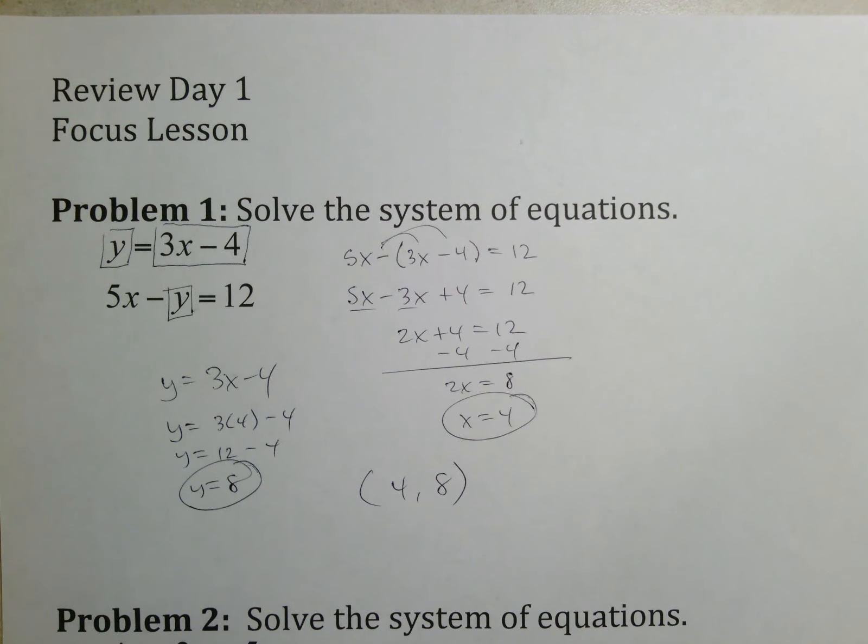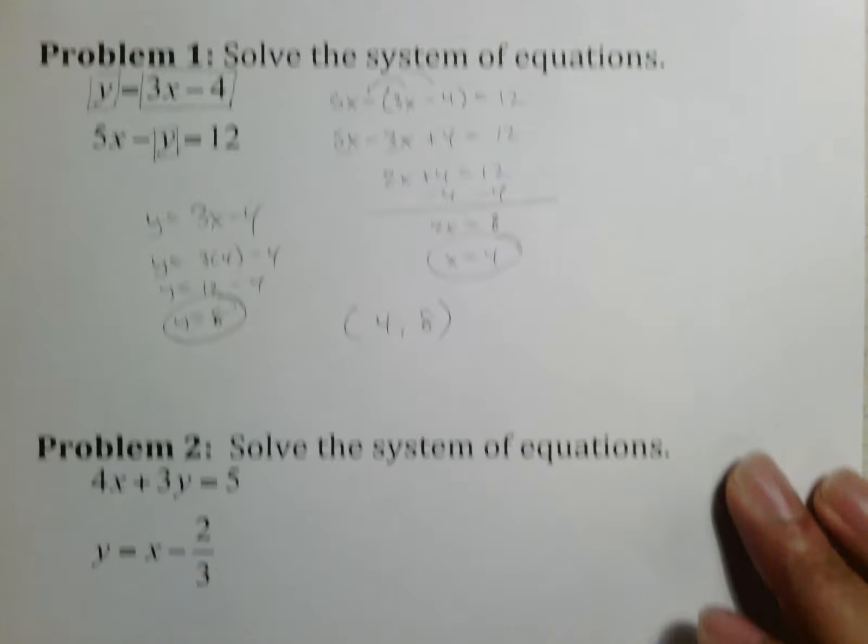So it turns into y equals 3 times 4 minus 4, which is 12 minus 4 or 8. In the end I should end up with 4 comma 8. Again, if there's anything on this example that confuses you, make sure you stop the video, bring me the work so I can see it and explain. You have to understand this because the test is Friday. Problem number two.